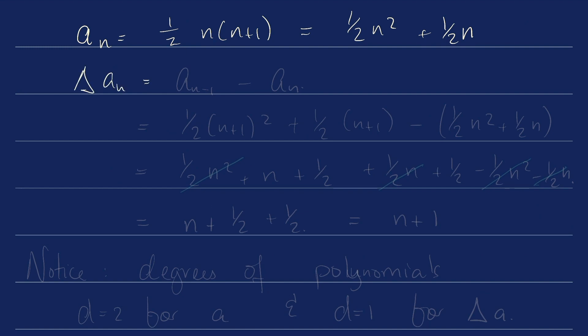Delta of a_n is going to be, as in the nth term of the difference sequence, a_{n+1} minus a_n. Doing some algebra, this is what we get, and at this point terms start to cancel. We get n plus 1/2 plus 1/2, which is n plus 1.